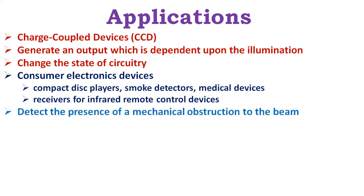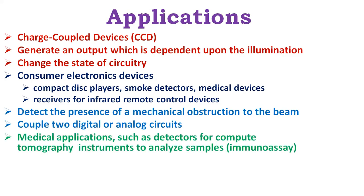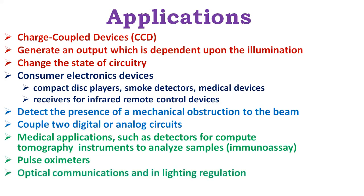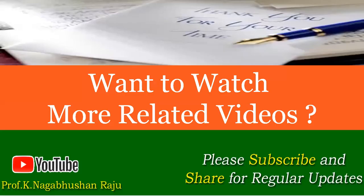A photodiode is often combined into a single component with an emitter of light, usually a light-emitting diode, either to detect the presence of a mechanical obstruction to the beam or to couple two digital or analog circuits while maintaining extremely high electrical isolation between them, often for safety. The combination of LED and photodiode is also used in many sensor systems to characterize different types of products based on their optical absorbance. Photodiodes are often used for accurate measurement of light intensity in science and industry. They generally have a more linear response than photoconductors. They are also widely used in various medical applications such as detectors for computed tomography coupled with scintillators, instruments to analyze samples as in immunoassay and pulse oximeters. PIN diodes are much faster and more sensitive than p-n junction diodes and hence are often used for optical communication and in lighting regulation.